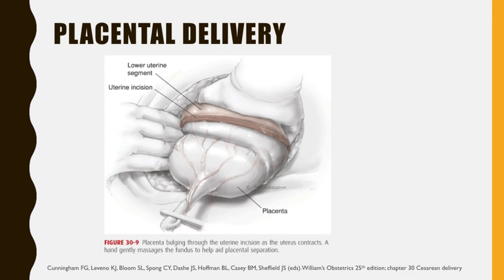Fundal massage may begin as soon as the fetus is delivered to hasten placental separation and delivery. Immediately after delivery and gross inspection of the placenta, the uterine cavity is suctioned and wiped out with a gauze sponge to remove avulsed membranes, vernix, and clots. Previously, ring forceps placed through the hysterotomy incision were used to dilate an ostensibly closed cervix, but this practice does not improve infection rates and is not recommended anymore.